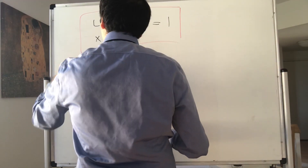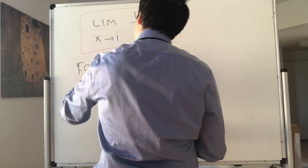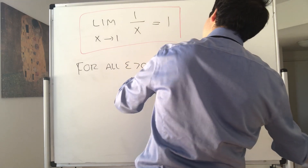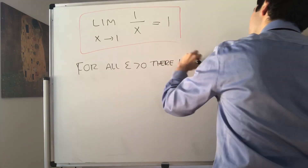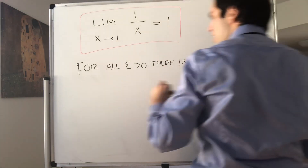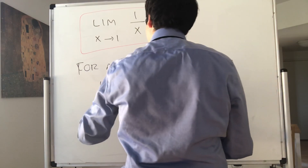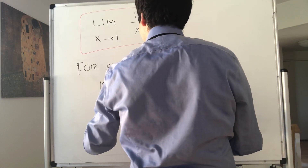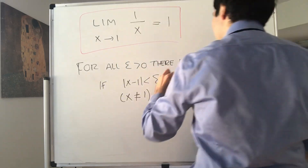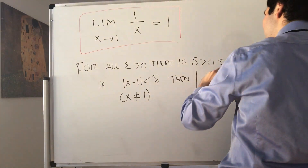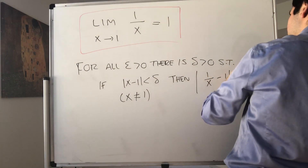So what do we have to show? We have to show that for all epsilon, there is a delta — delta positive — such that if |x − 1| is less than delta, where x is not equal to 1, then |1/x − 1| is less than epsilon.